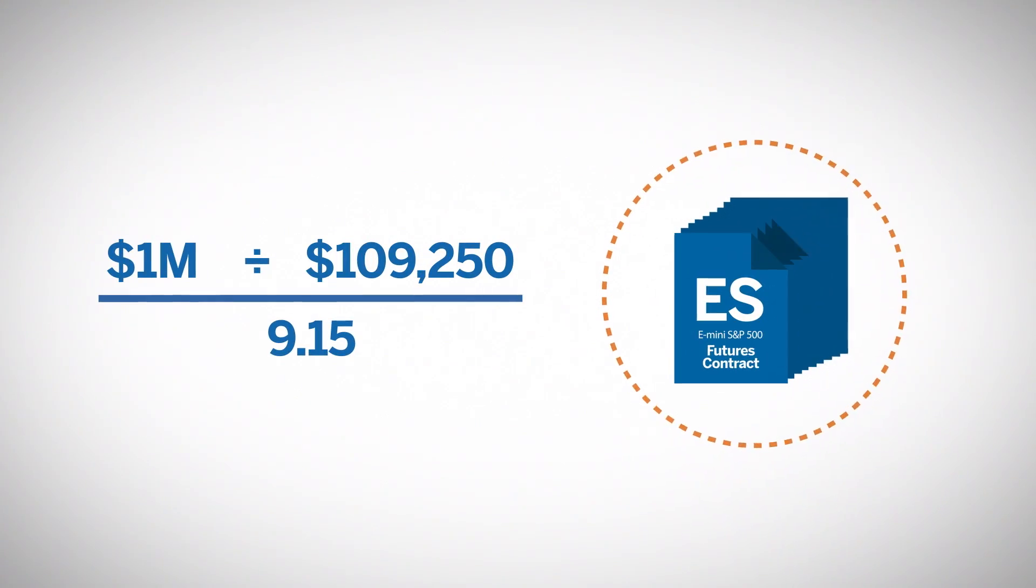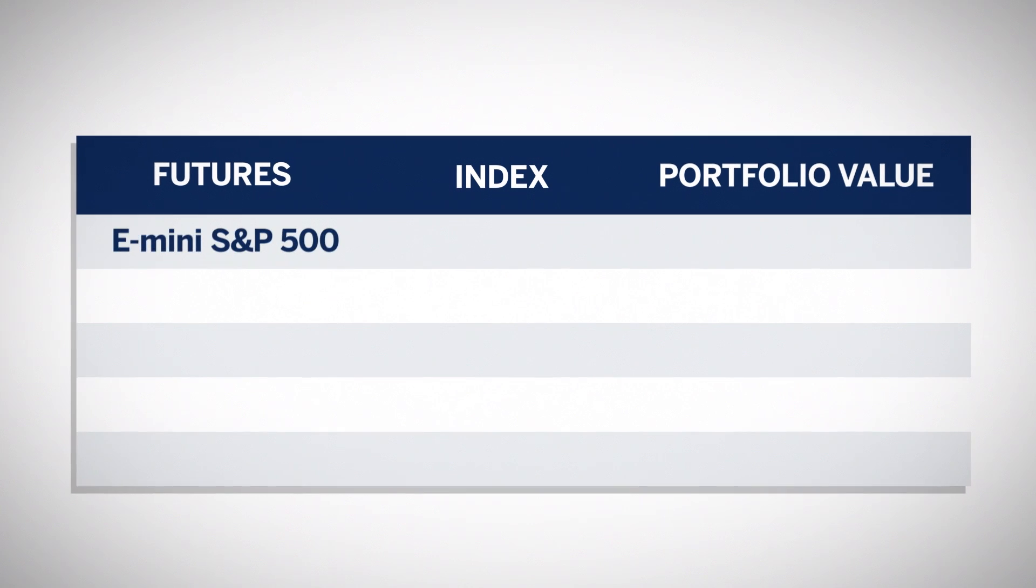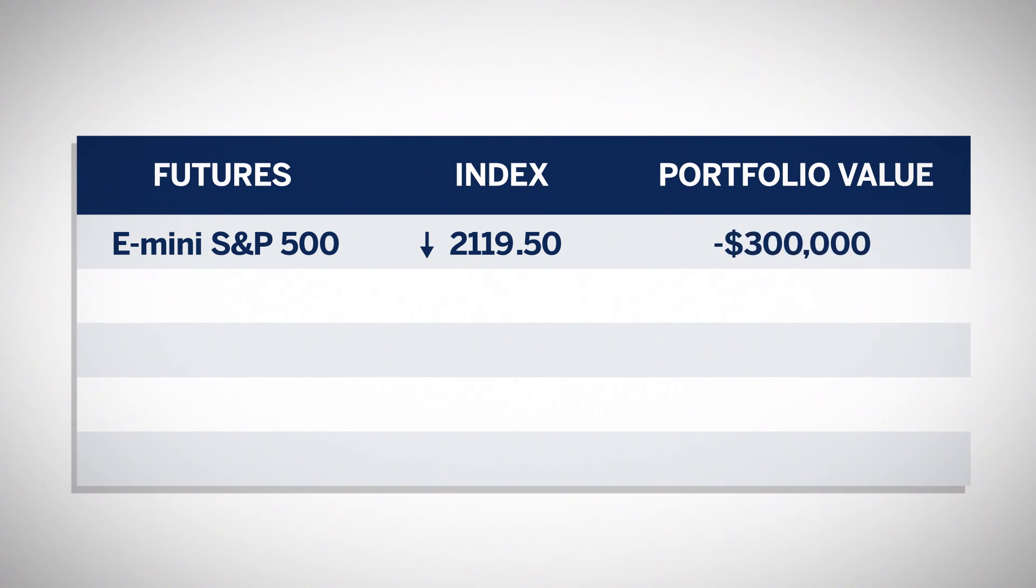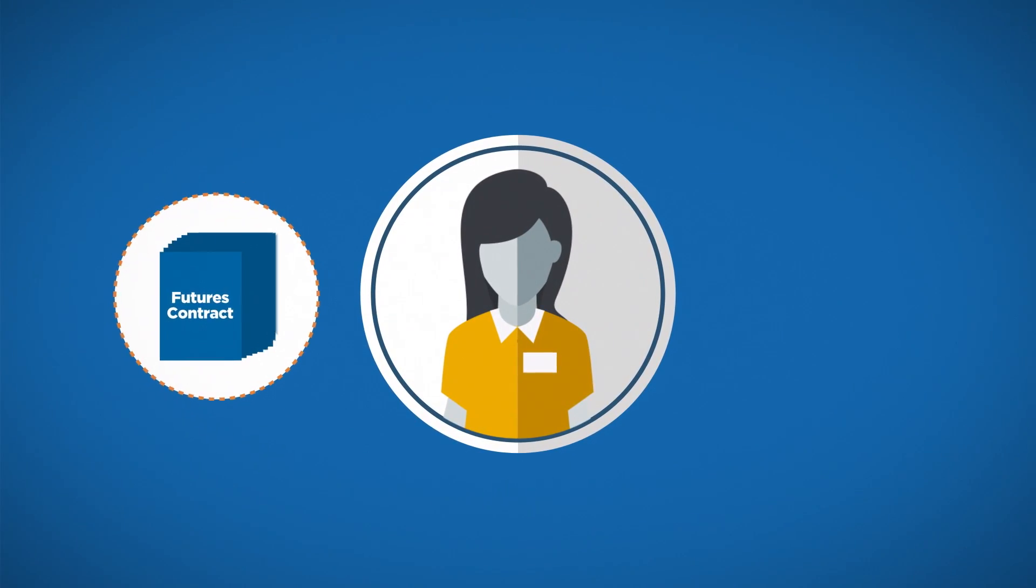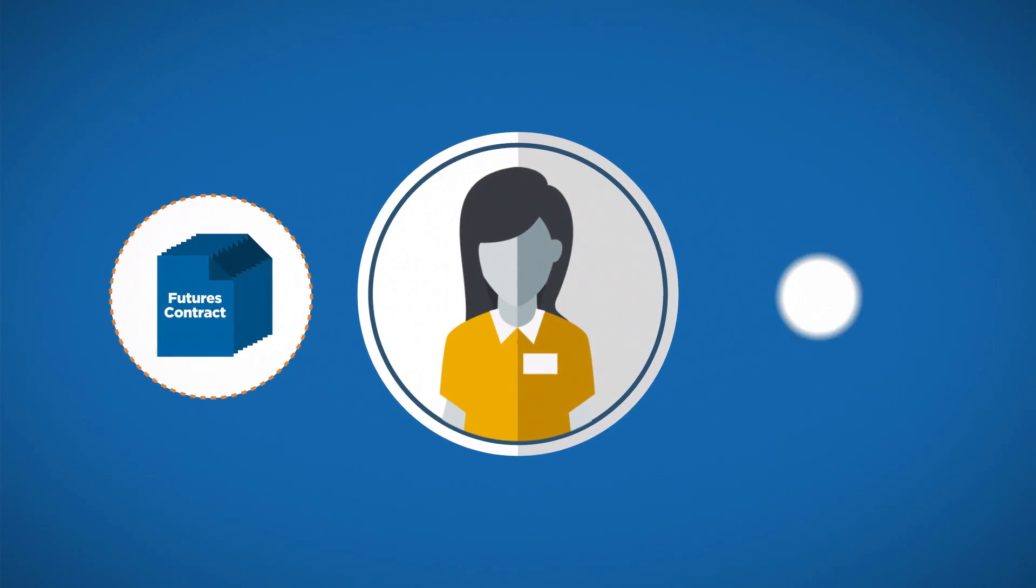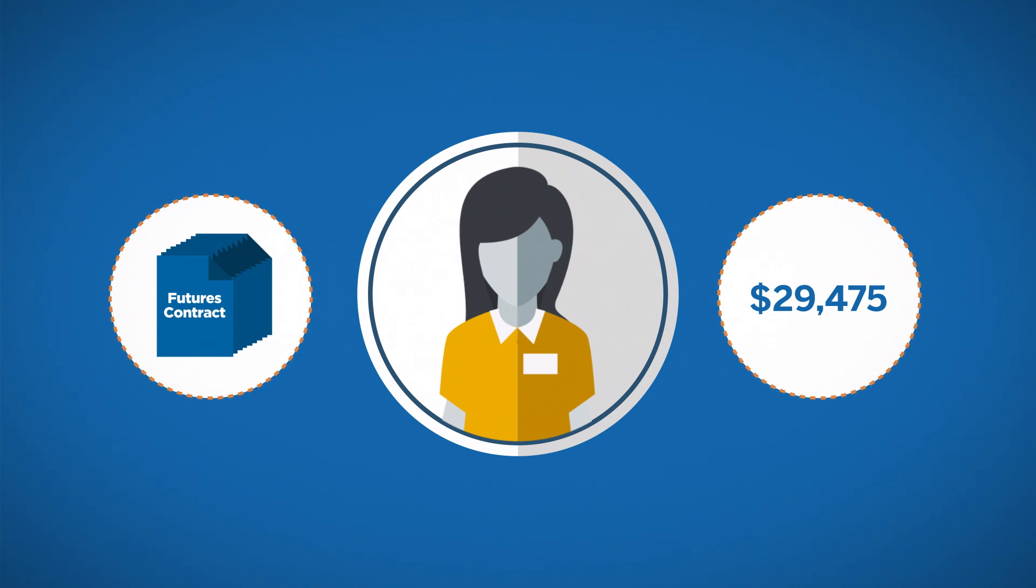Say the S&P 500 index goes down by 3%, from $2,185 even to $2,119.50, a drop of 65.5 index points. The portfolio loses 3%, or $300,000. If the manager sold 9 futures contracts, she would have gained $29,475, which is 65.5 index points times $50 times 9 contracts.